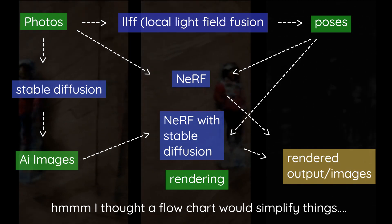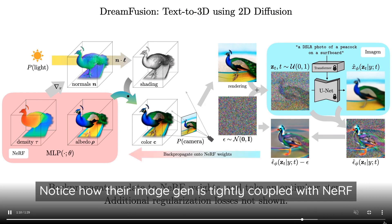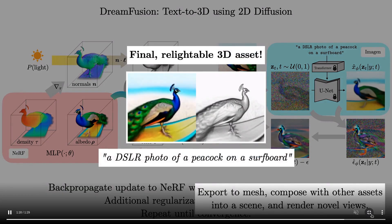I wanted to clarify the differences between what I was doing and what DreamFusion is doing. DreamFusion is an algorithm that does text-to-3D objects. The main difference is that DreamFusion uses a very coupled algorithm where the NERF is tied directly with Stable Diffusion — basically rendering images and sending those to Imagen to create a loss function and optimize. Whereas what I was doing is pre-rendering a bunch of images and then optimizing those pre-rendered images.